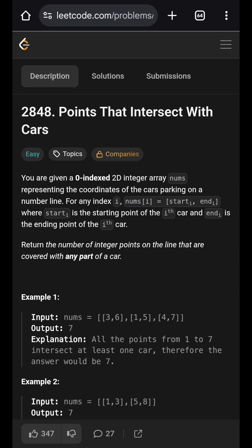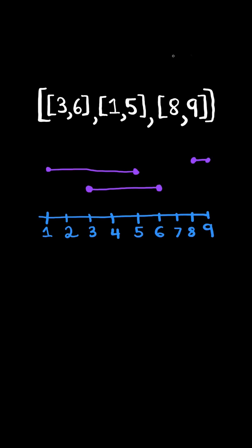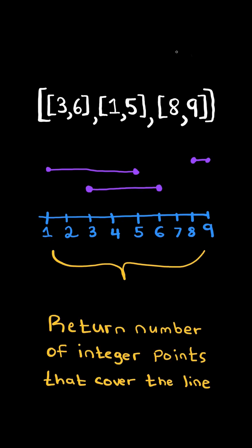Points that intersect with cars. Given a list of points, and consider the points on the number line. Return the number of integer points that cover the number line.